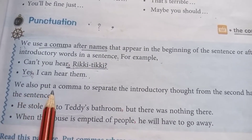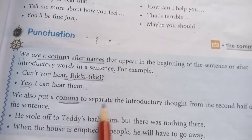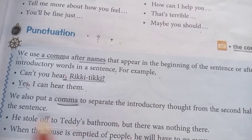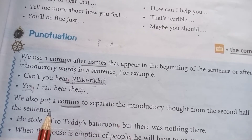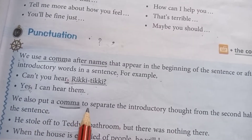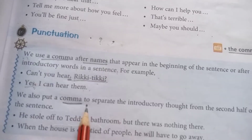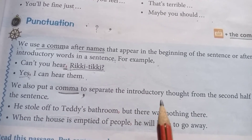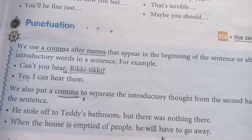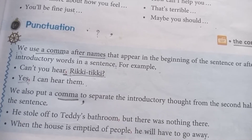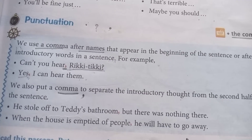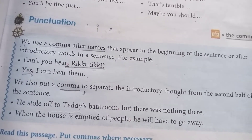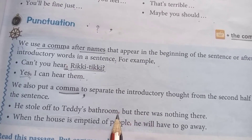Next rule. We also put a comma to separate an introductory thought from the second half of the sentence. We should have to give the comma — this is the comma sign. When we should give the comma — after the introductory thought, we have to give the comma. If the second sentence depends on the first sentence, you should have to give the comma like this.